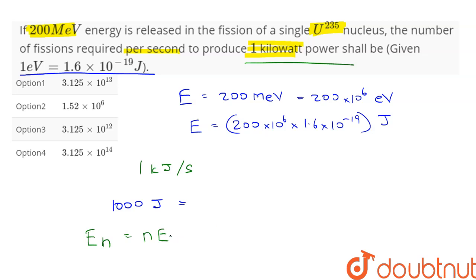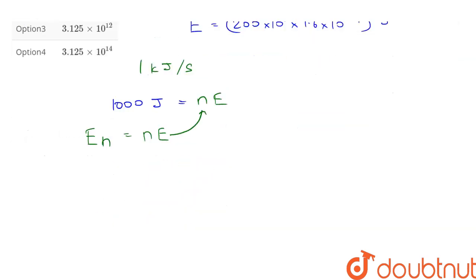This will be equal to 1000 joules. Therefore, 1000 joules = n × E. So 1000 = n × 200 × 10^6 × 1.6 × 10^-19.